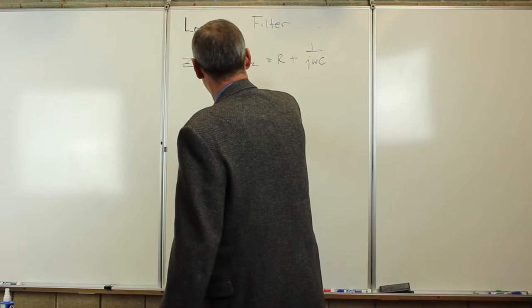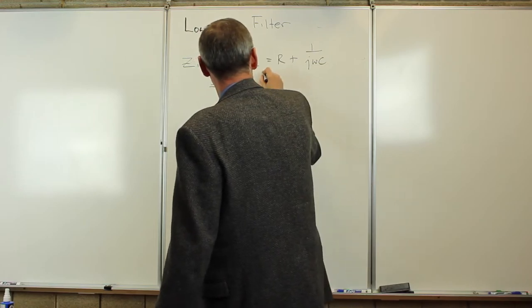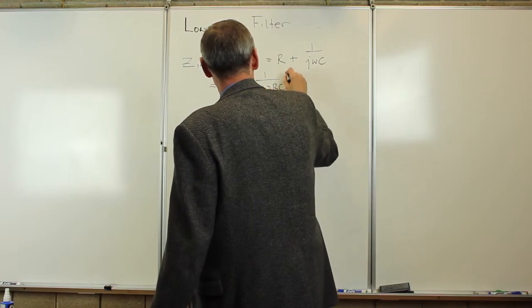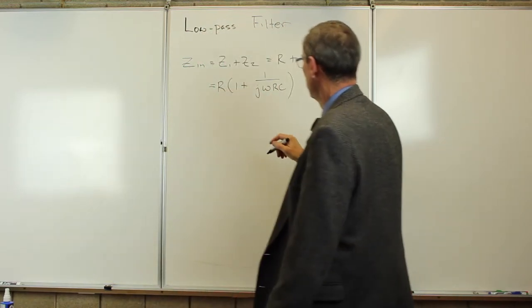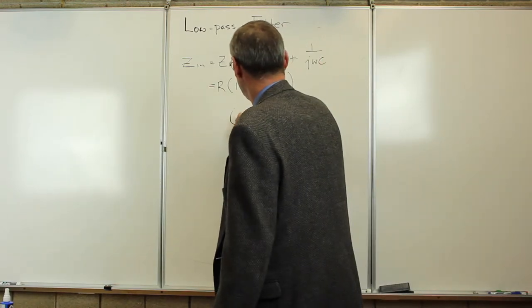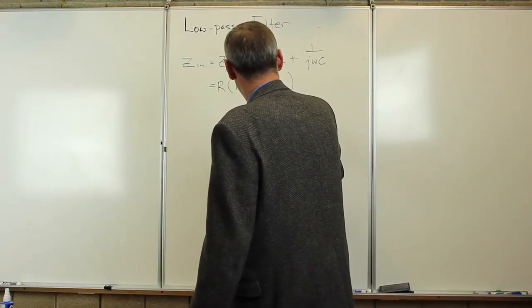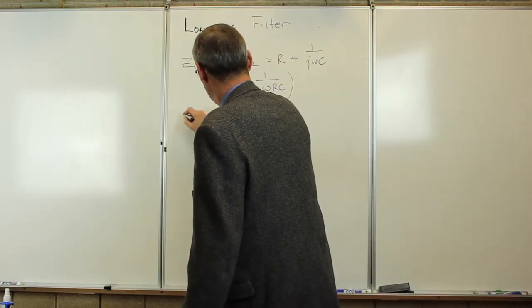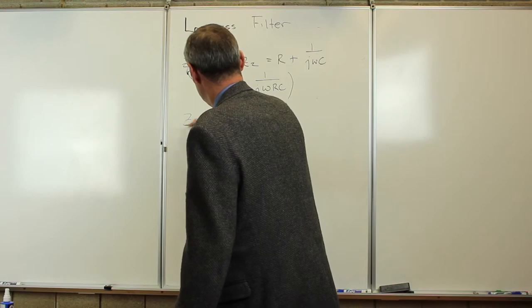Let me factor the R out so it's got units of resistance. So this is R times 1 plus 1 over J omega RC. There's the characteristic frequency. 1 over J is minus J, so I'm going to get 1 minus J omega RC over omega times R. So there's the input impedance.